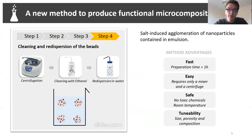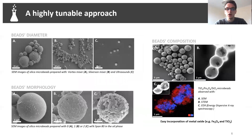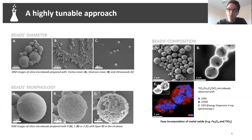This method offers a lot of advantages. First, it's fast. Then, it's easy — you don't need fancy equipment. It's safe: you don't need toxic chemicals, and everything is done at room temperature. And it's highly tunable. We observed that we could easily modify the size of the beads by playing with the mixing speed, and we can play with the morphology — by adding different chemicals inside the system, it was possible to move from a smooth to a rough surface, which could be interesting for adsorption. Most importantly, you could combine the different metals you wanted: silica, iron oxide, and titanium as expected.